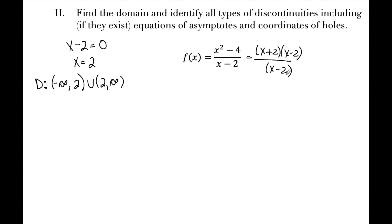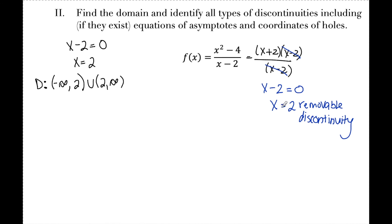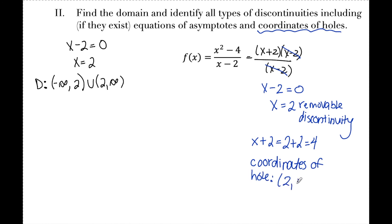In the previous example, nothing canceled, so those factors gave vertical asymptotes. Here, a factor in the numerator cancels with a factor in the denominator — when factors cancel, that gives a removable discontinuity or hole at that x value. Setting x-2 equal to zero gives x equals 2. Plugging 2 into the remaining expression x+2 gives 4, so the coordinates of the hole are (2, 4).